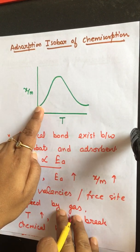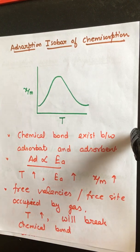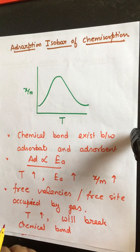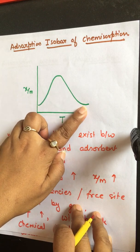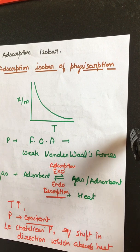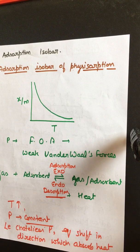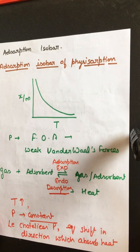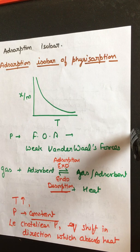So in chemisorption: initially as temperature increases, activation energy increases and extent of adsorption increases. But after a certain limit, the chemical bond that developed between adsorbate and adsorbent breaks, and extent of adsorption decreases. This graph is for chemisorption and the continuously decreasing graph is for physisorption. Remember: adsorption isobar is the graph plotted between extent of adsorption and temperature at constant equilibrium pressure. In the next video we will talk about the next topic — till then, goodbye.